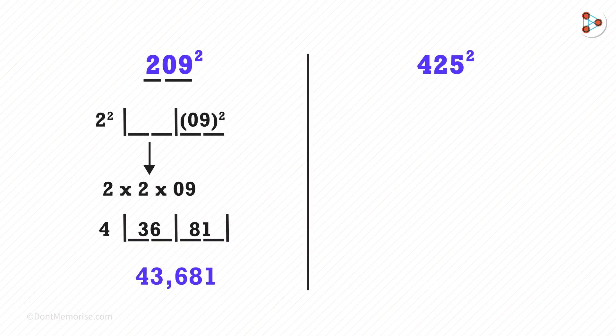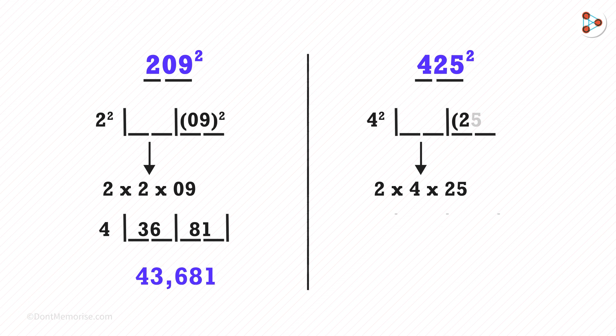So if you want to find 425 squared, then the calculation will be like this. By solving it further, we will get this answer.